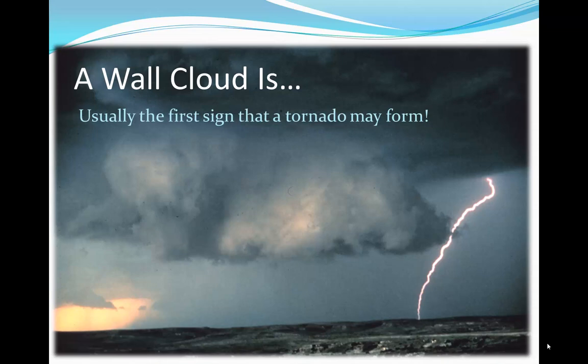A wall cloud is a lowering — at least it looks like a lowering — of the thunderstorm base. A wall cloud is very important because most times it's the first sign that a tornado may form. But first of all, this low hanging cloud right here, that is a wall cloud.